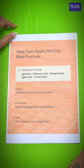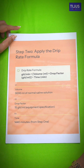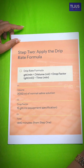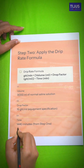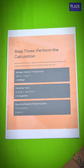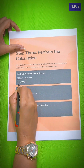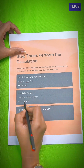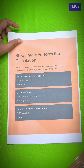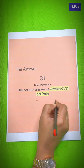Step 2 is to apply the drip rate formula. The formula is: volume in ml multiplied by drop factor, divided by time in minutes. The volume given is 3000 ml, the drop factor is 15, and the time is 1440 minutes. So 3000 × 15 = 45,000 GTT, divided by 1440, gives 31.25 GTT per minute. Rounded, the answer is 31 drops per minute.